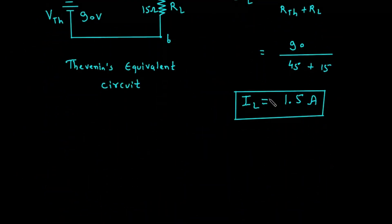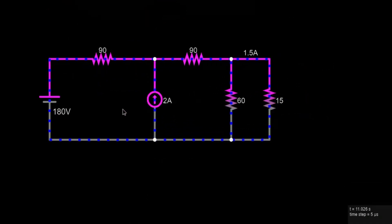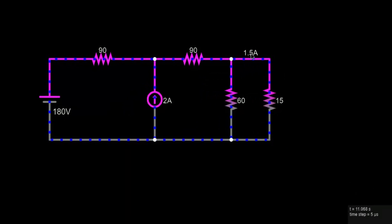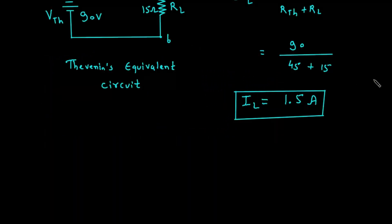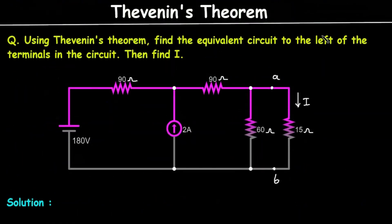We can verify our answer using our simulator app. Here we can see this is the same circuit, and the current flowing through the 15 ohm resistor is 1.5 ampere. Hence our answer is correct. If you find this video helpful, feel free to like, share and subscribe to this channel. Thank you.